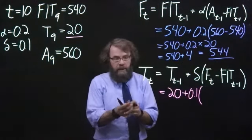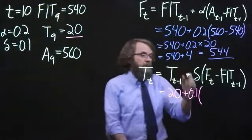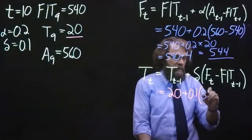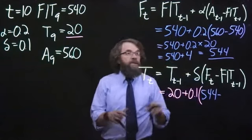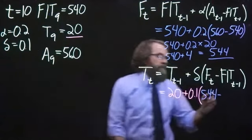Times F, the level that we just calculated, which is 544, and then we subtract off the forecast including the trend for the previous period, which was 540.